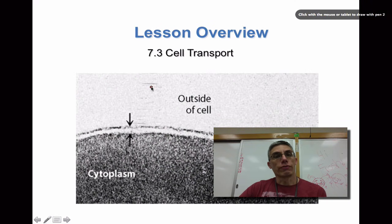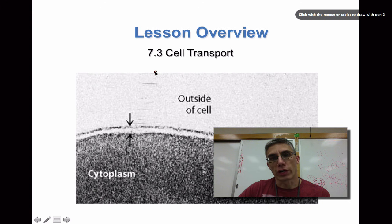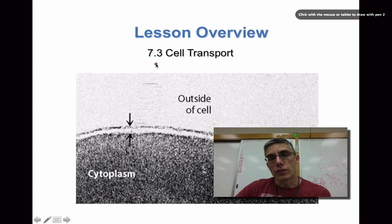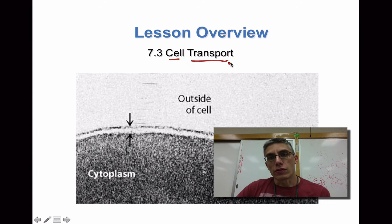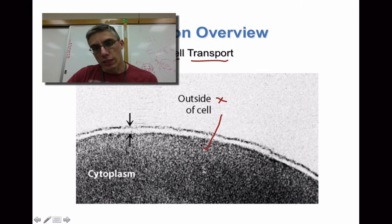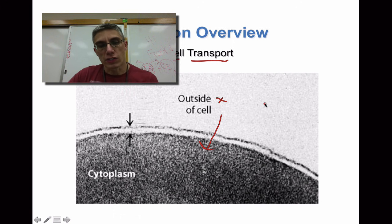Alright, so welcome back. We are finally to our very last screencast for Chapter 7. Chapter 7 is focused on three things: in the beginning we focused a little bit on history, in 7.2 we looked at cell structure, and in 7.3 we're going to look at cell transport — moving materials from the outside of the cell to the inside the cell, using some different methods.